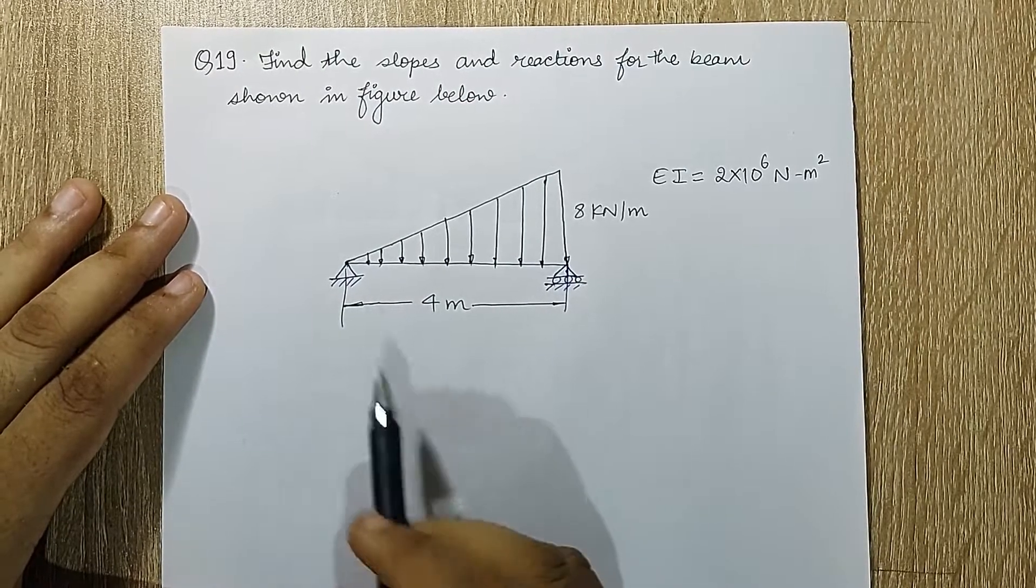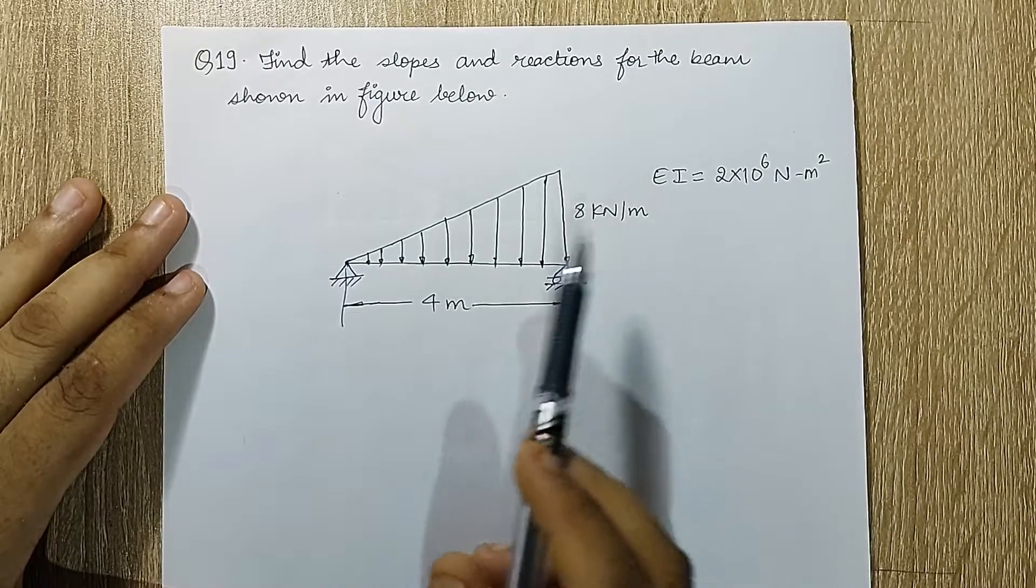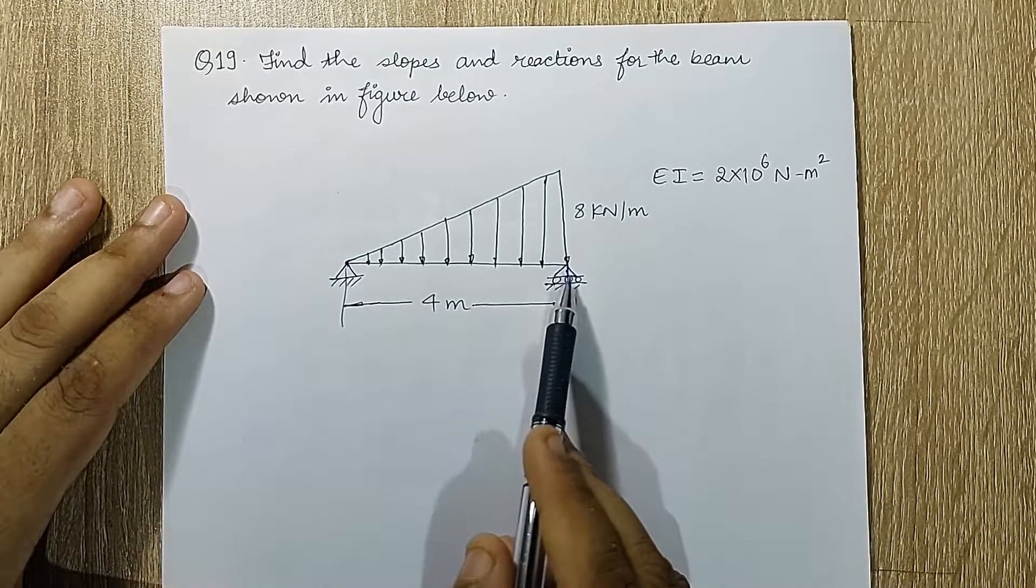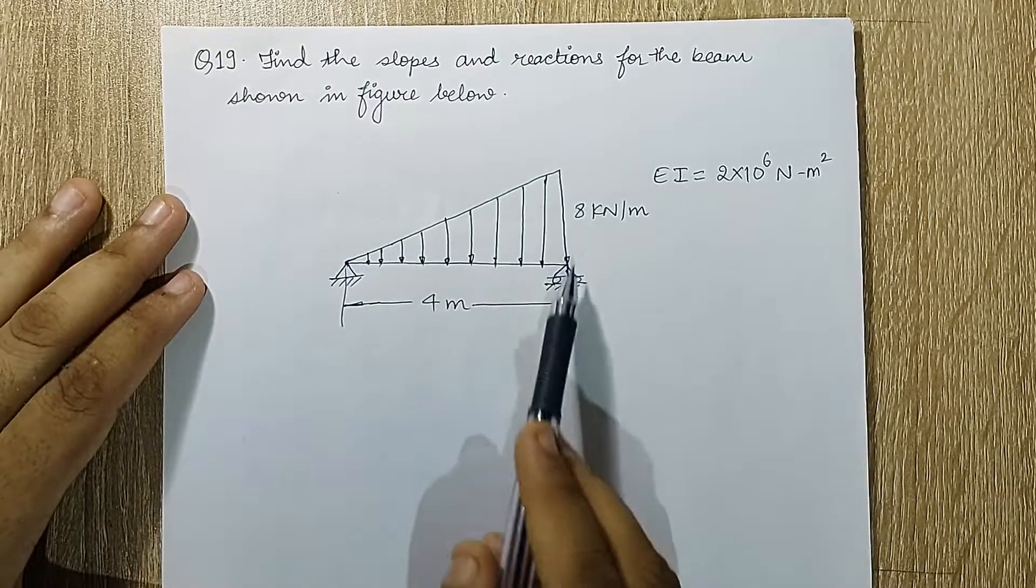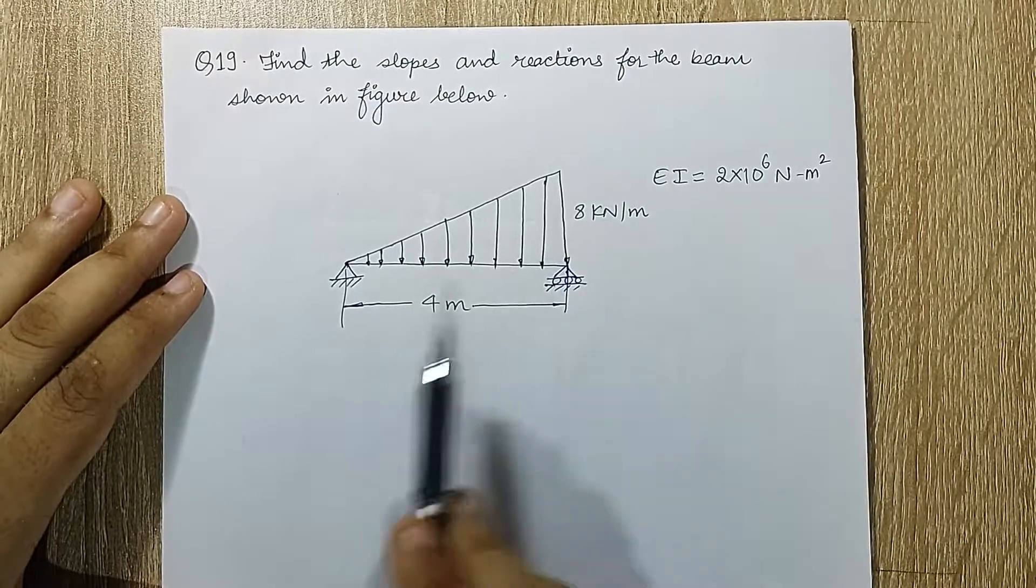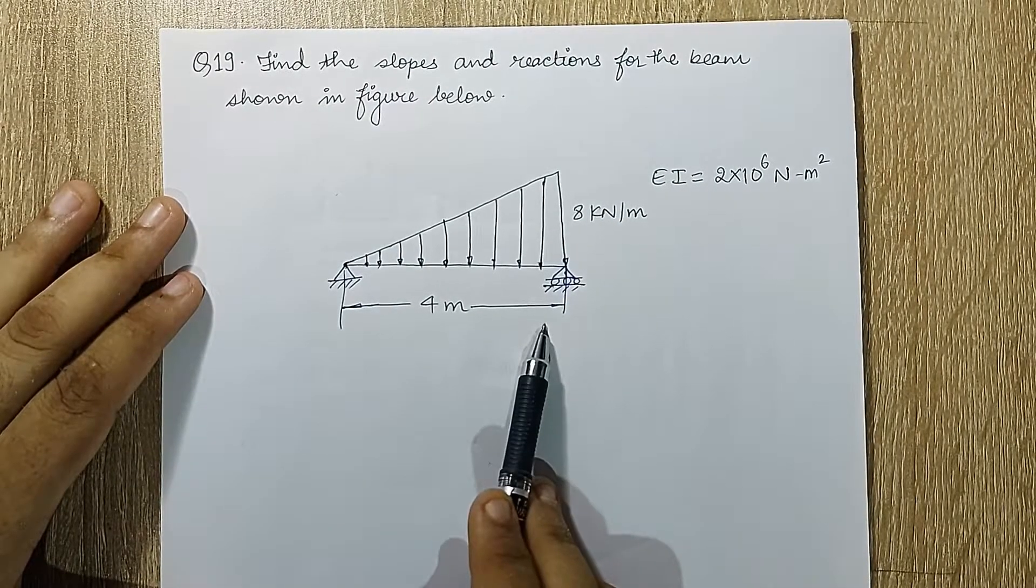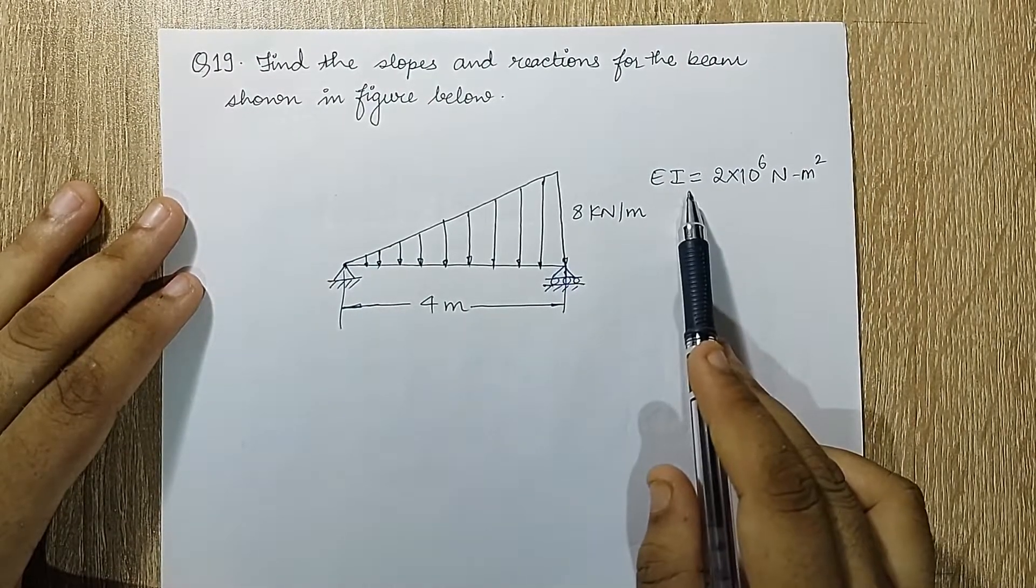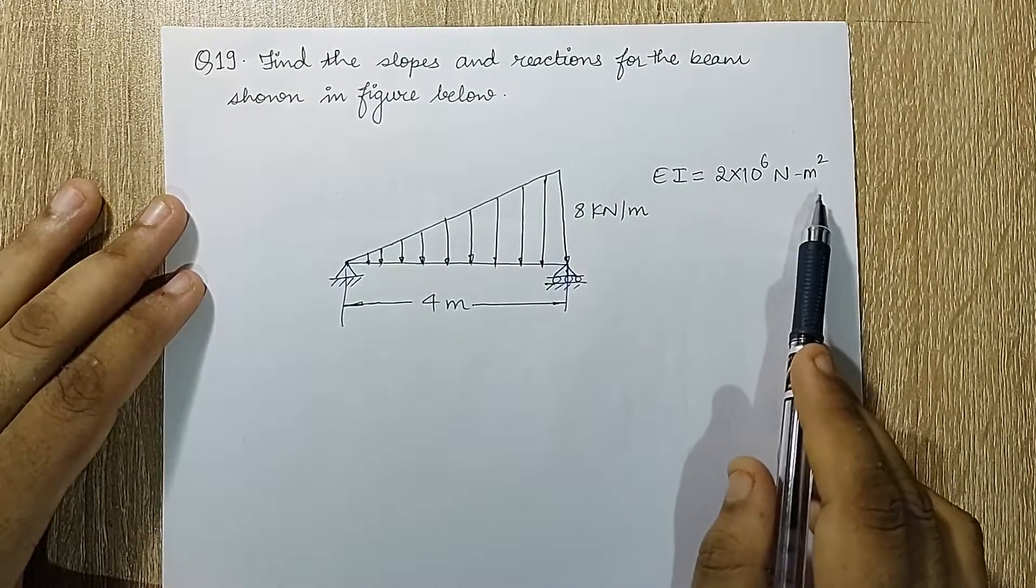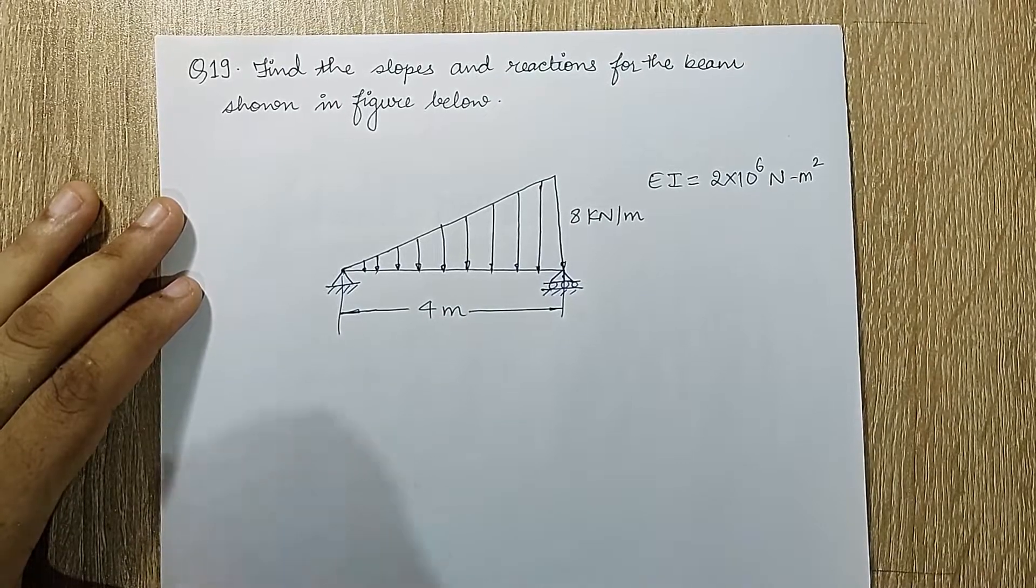Find the slopes and reaction for the beam shown in the figure below. I can see one end of the beam has a hinge and the other end has a roller. This is a UVL of load intensity 8 kN per meter. The length over here is given as 4 meters. The value of EI, which is flexural rigidity, is given as 2 into 10 raised to 6 Newton meter square. I'll be solving the entire question in terms of kN meter.